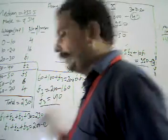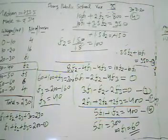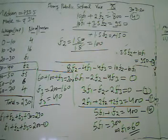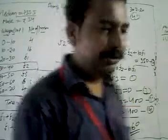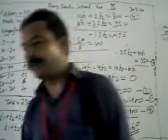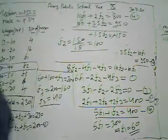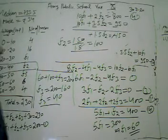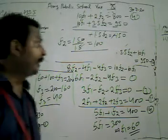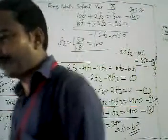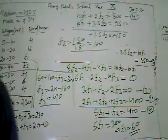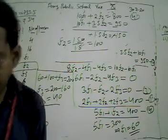We have found all unknown frequencies: F1 = 60, F2 = 100, F3 = 40. Please revise all the problems and understand the empirical relationship we discussed today. Practice the problems at home. If anyone has any doubts, please ask me in my online classes. Thanks to all.